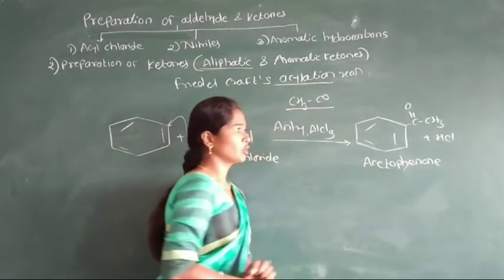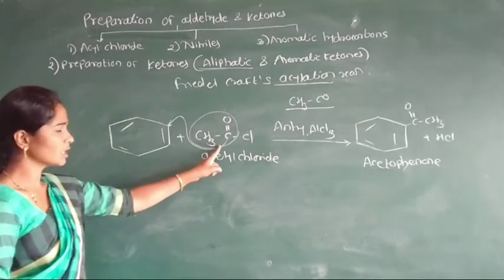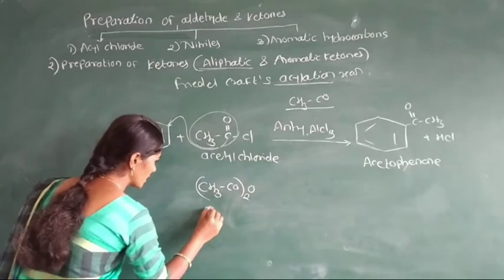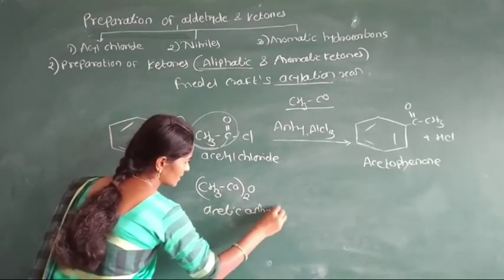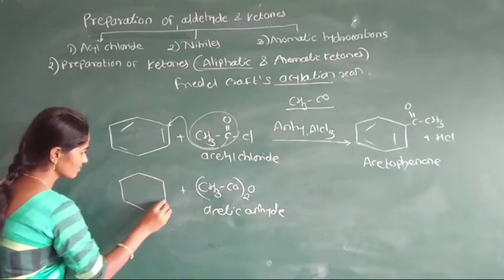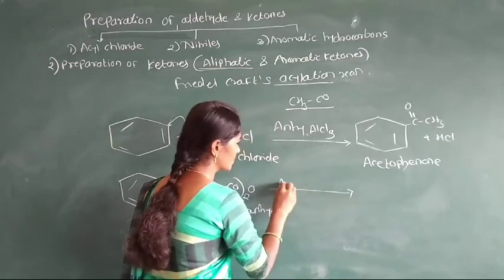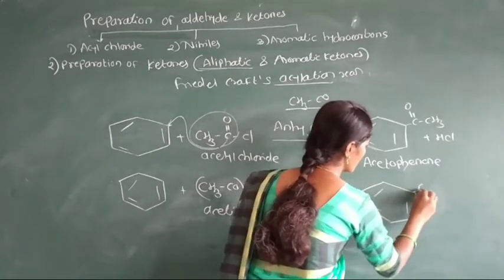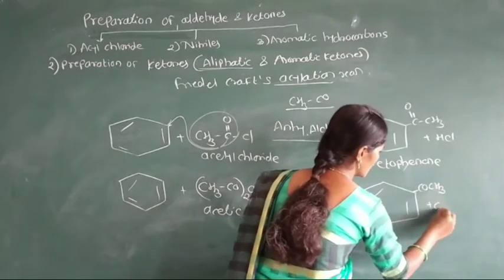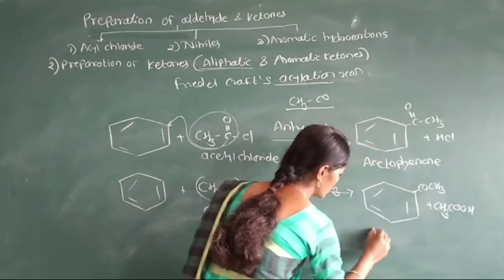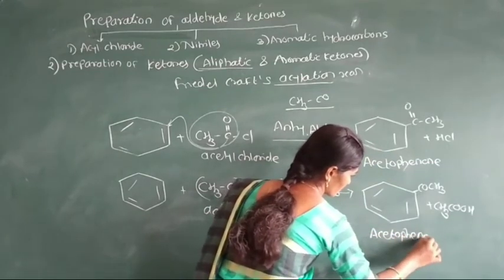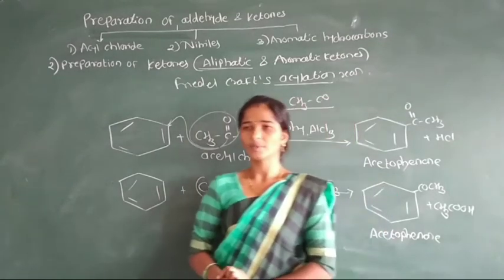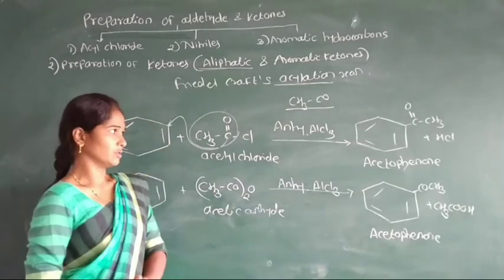For formation of aromatic ketones, instead of acyl chloride, acetic anhydride — that is, (CH3CO)2O — can also be used. This acyl chloride or acetic anhydride reacts with benzene in the presence of AlCl3, giving the same product — CO-CH3 — plus the byproduct CH3COOH, which is called acetic acid. This reaction is called the Friedel-Crafts acylation reaction.